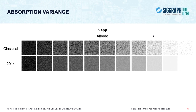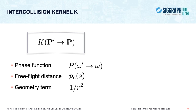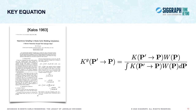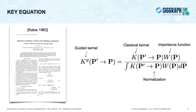Zooming in on a small flat patch of the object, we see significant absorption variance across the full range of albedos. Only in the case of the non-absorbing material do we have, by classical sampling, a truly zero variance walk. For all other absorption levels, the guiding technique from 2014 gives a nice reduction in variance. The zero variance theory writes about an intercollision kernel K that takes us from one place in phase space to another between collisions — typically thought of as three separate parts: a phase function P giving a new direction, a free flight distance sampling determining how far the next collision should be, and implicit in this procedure a 1/r² geometry term.